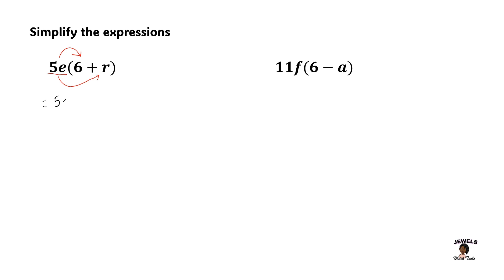So we have 5e being multiplied by 6, and then added to the product of 5e times r. In this particular session, we're going to be applying two different rules because we have numbers that can be simplified, which is our 6 and our 5.